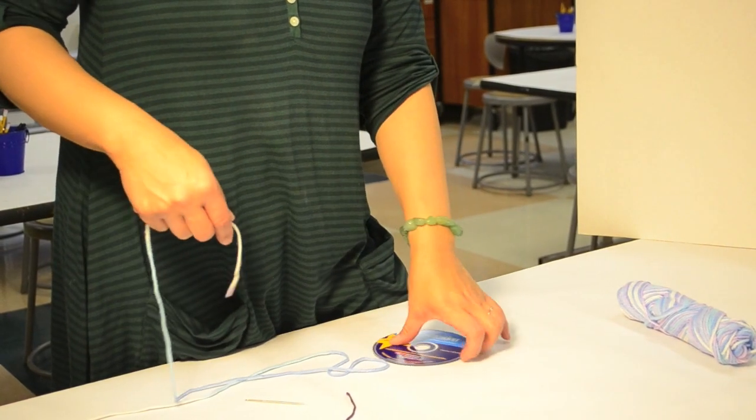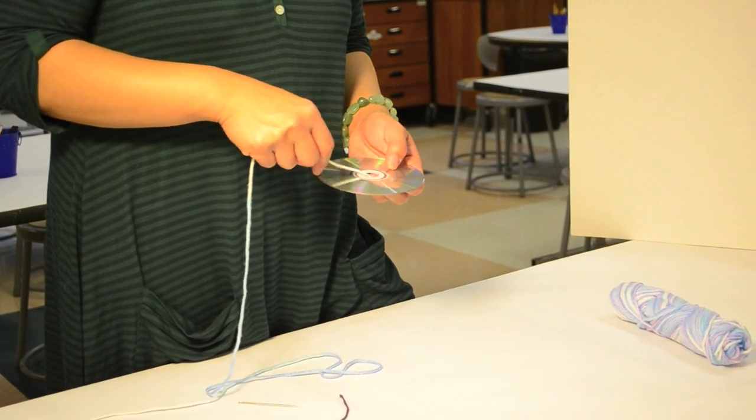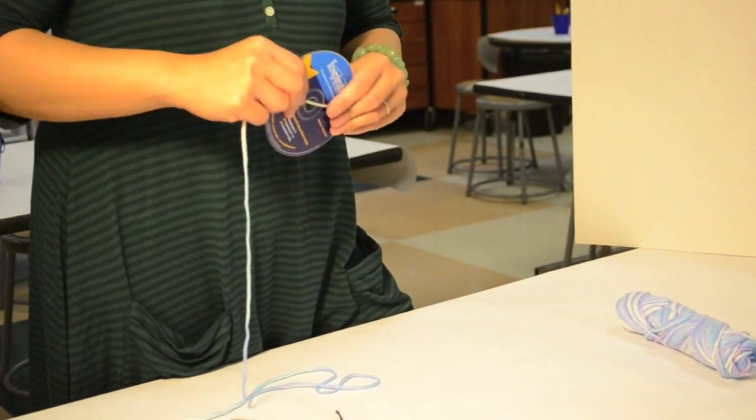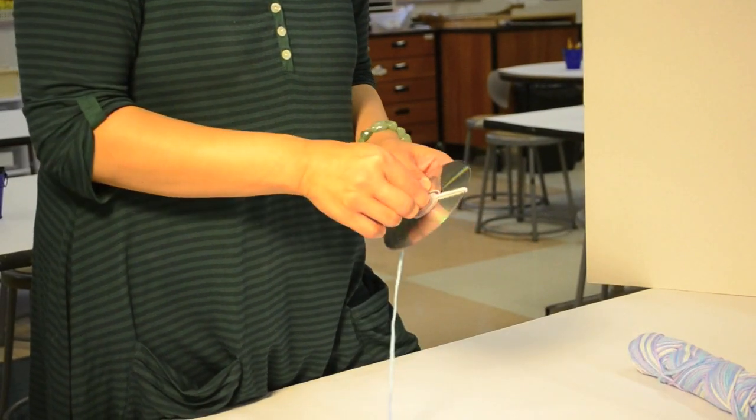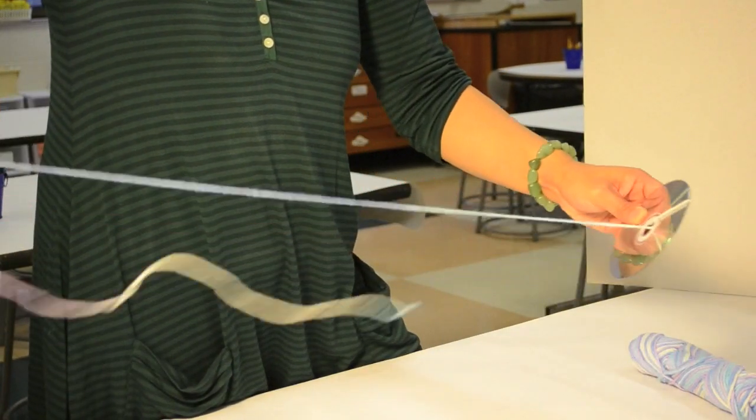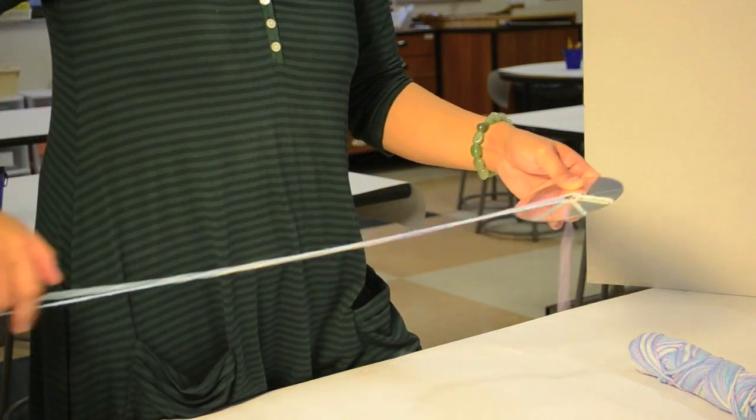To make your loom, you are going to take a long strand of yarn and wrap it around your CD. To do this, pull one end of the yarn through the hole of your CD and hold it down with one of your hands. Then you can start weaving it in and out of the hole while still firmly holding down the other end of the yarn against the CD.